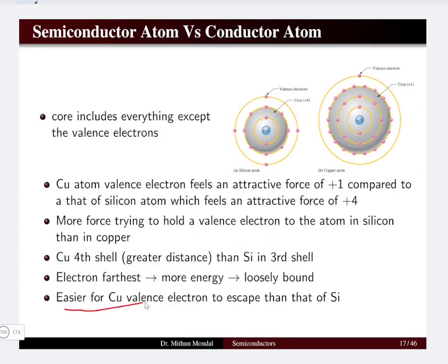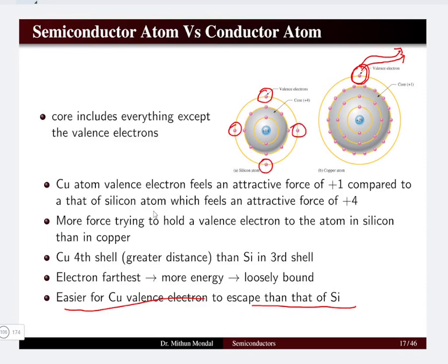It will be loosely bound compared to silicon, and more conductivity will be there for copper compared to silicon. It will be easier for the copper valence electron to escape. The one electron present in the valence shell of the copper atom will easily leave and move to the conduction band, whereas more energy will be required for the silicon atom's valence electron to escape. So conductivity of conductors is greater compared to silicon.